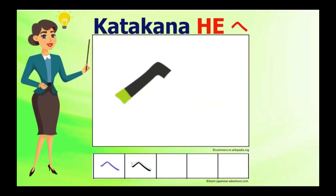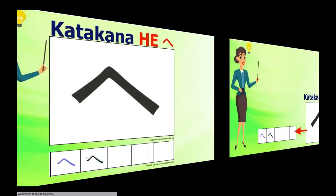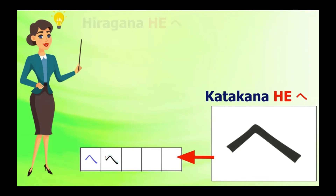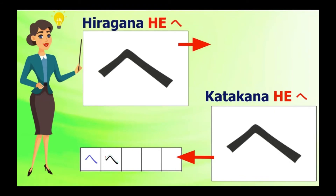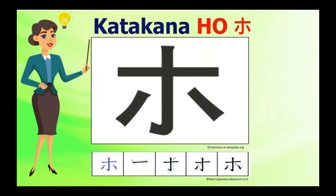Katakana He is very easy to remember since it looks like a check mark turned upside down. It looks exactly very similar to hiragana He with only two stroke orders. Katakana Ho — notice that the first and second strokes form a cross, but remember to emphasize the point on the bottom part of the second stroke.